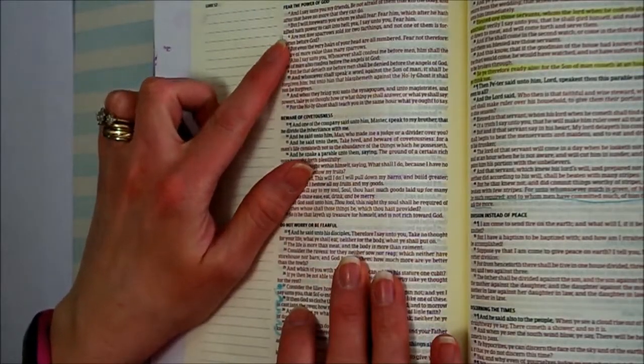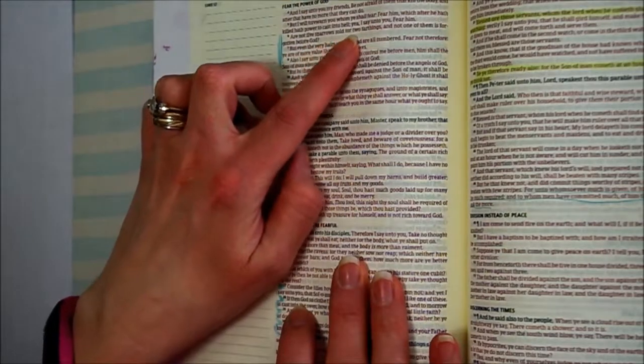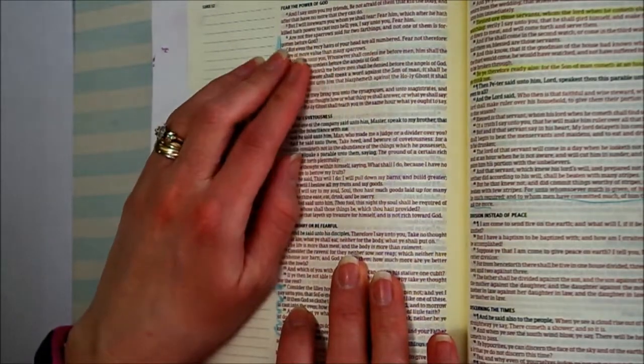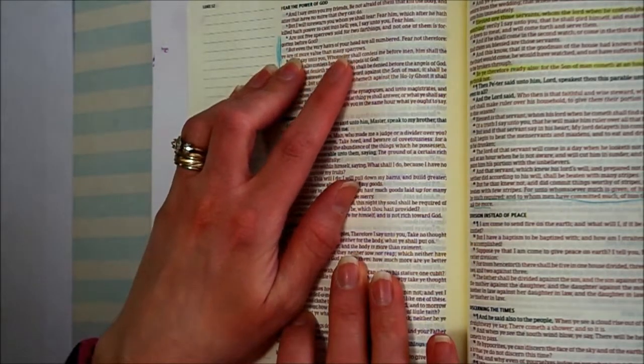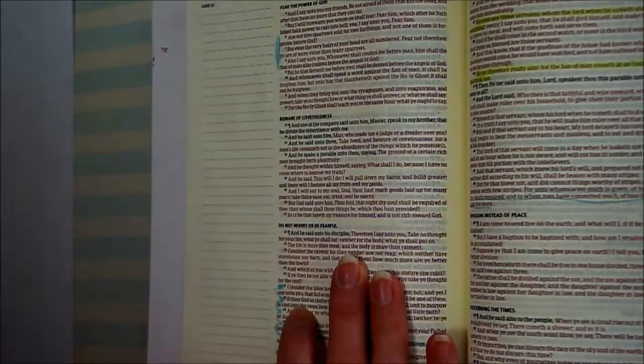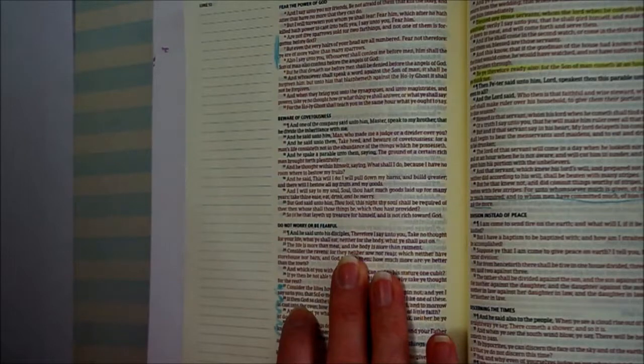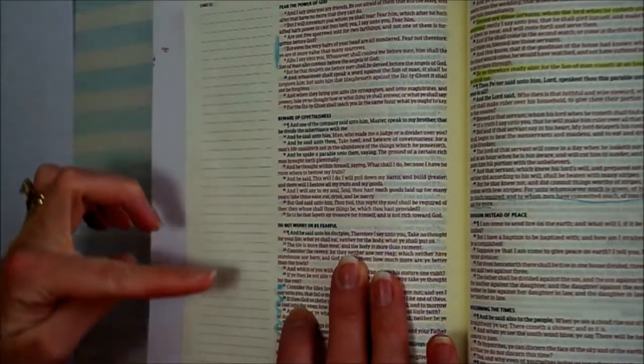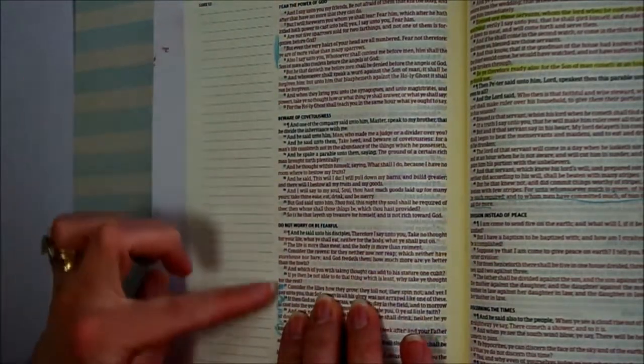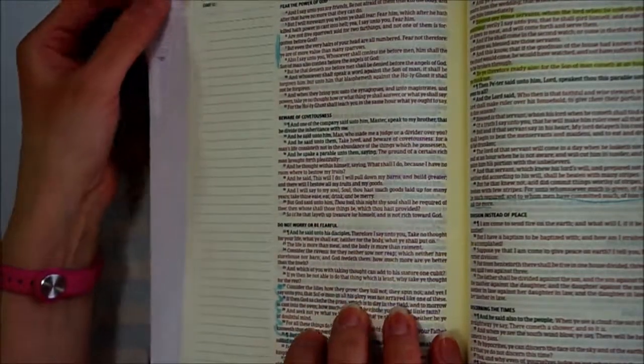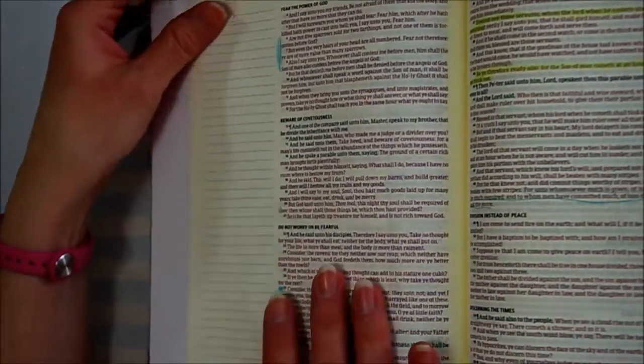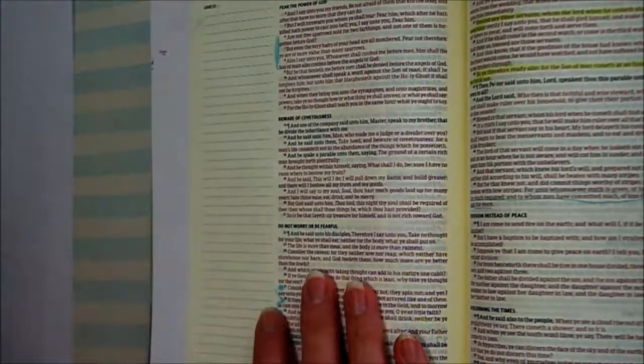I'm going to do Luke 12:6. It says, 'Are not five sparrows sold for two farthings, and not one of them is forgotten before God? But even the very hairs of your head are all numbered. Fear not, therefore, ye are of more value than many sparrows.' That part, along with verse 27, 'Consider the lilies and how they grow,' was in my reading this past week, and I liked that and thought it would be cute here.